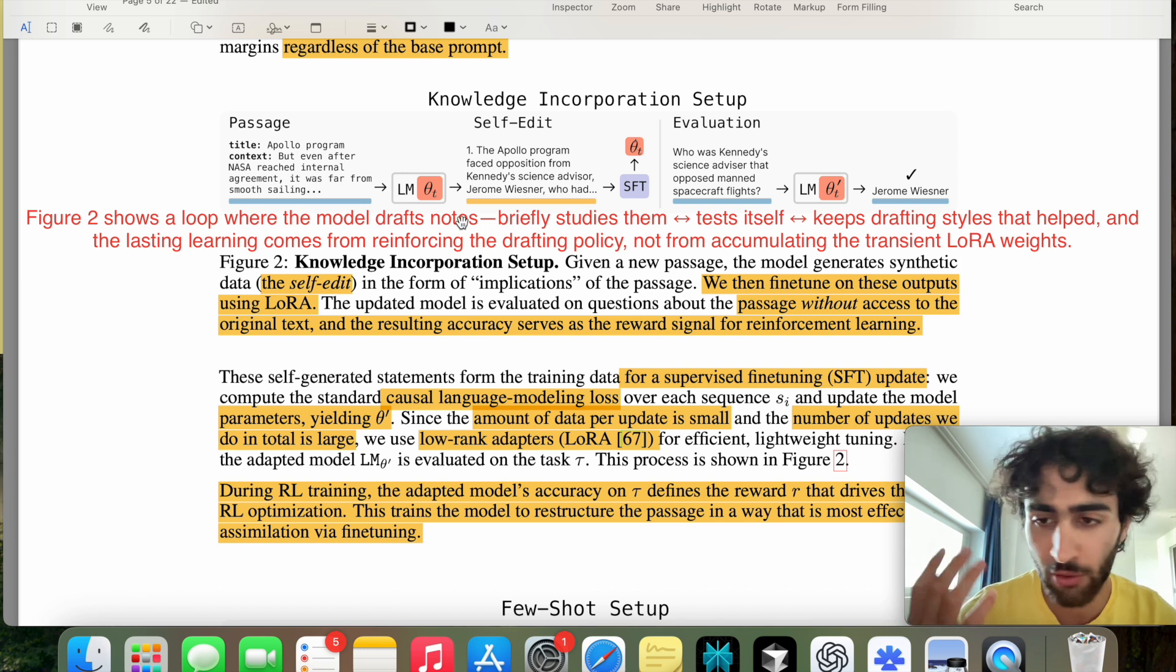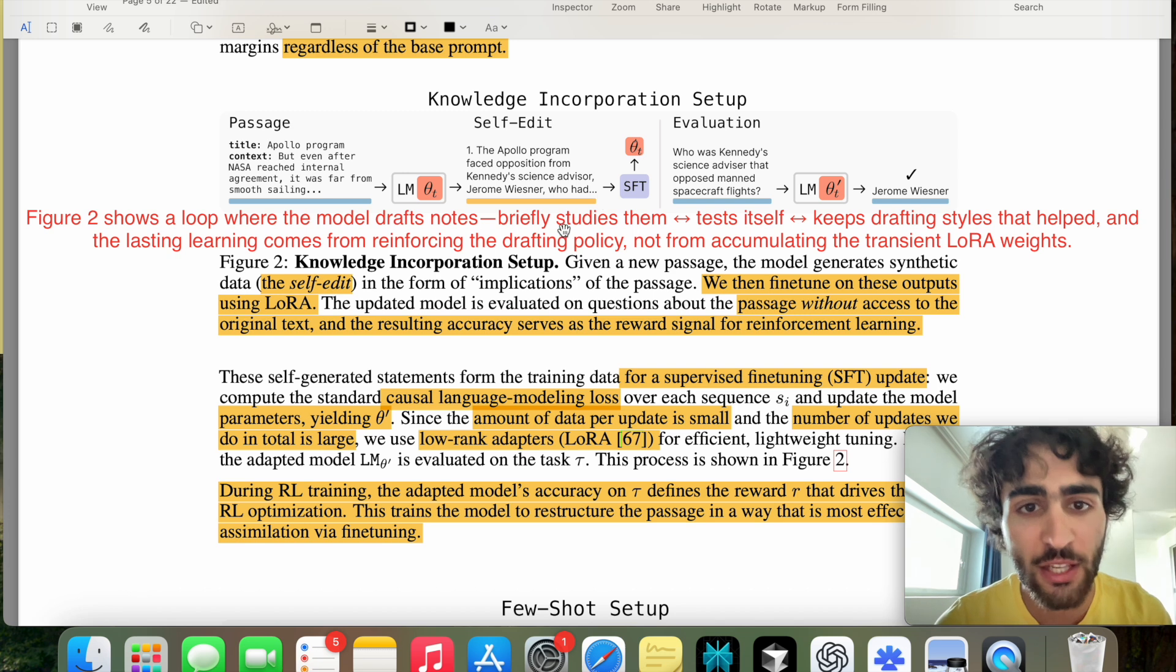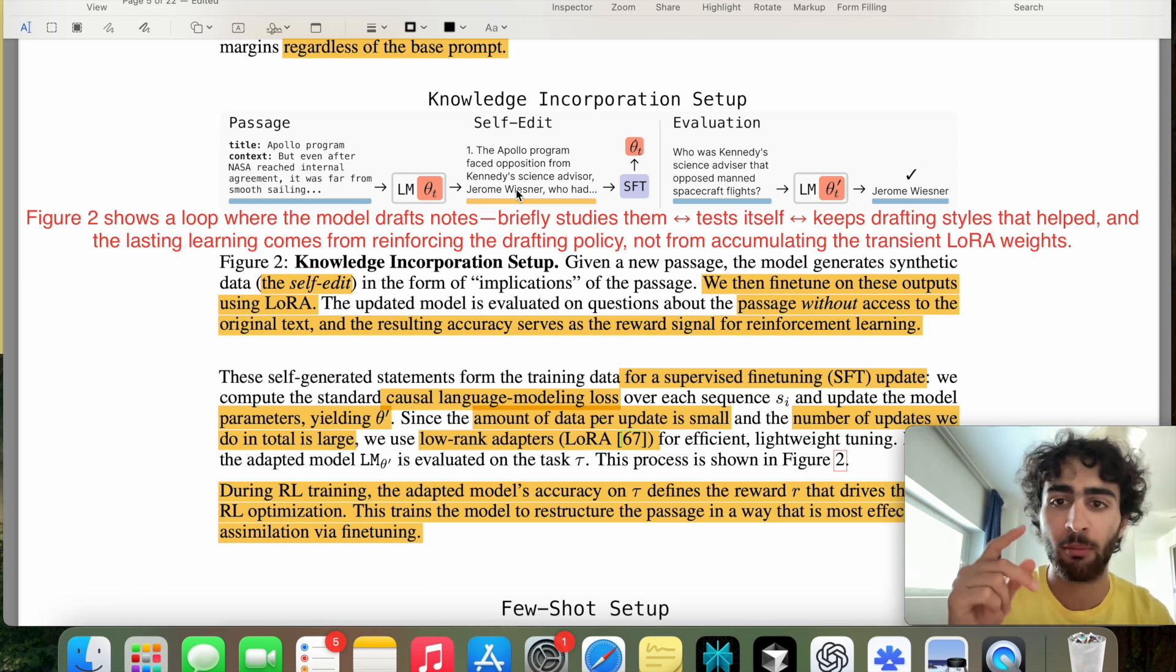So in another way, figure two shows a loop where the model drafts notes. So if we think of the same student context, draft notes, which are here, briefly studies them, which is this step, tests itself, which is this step, and then keeps drafting styles that help, which is to say in the next iterations on new data. And the lasting learning comes from reinforcing the drafting policy. So in essence, this step of drafting new self-edits.